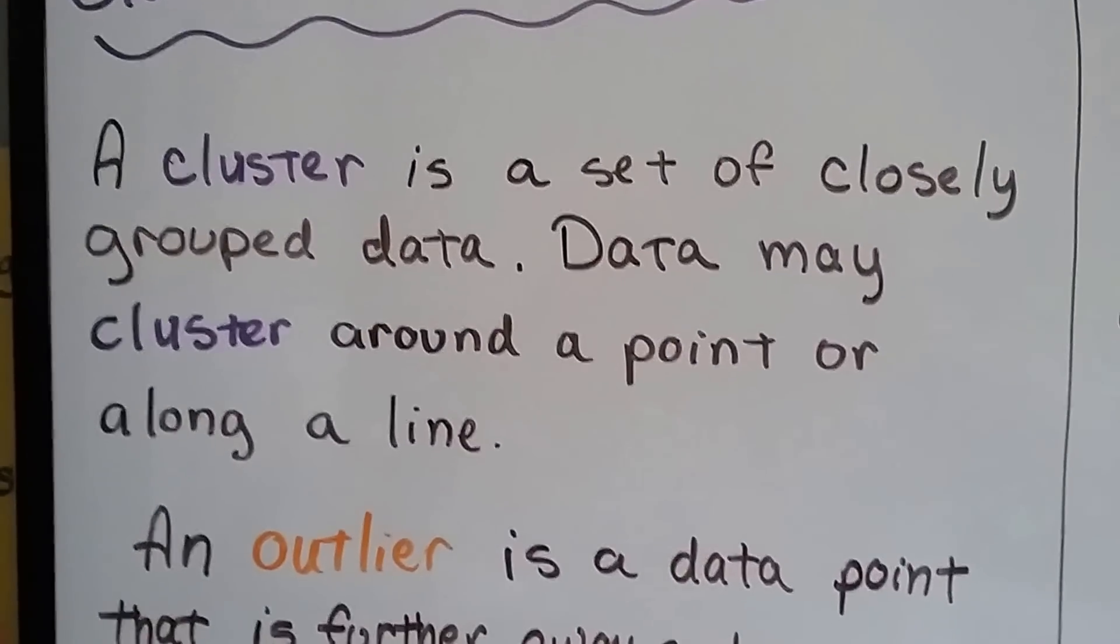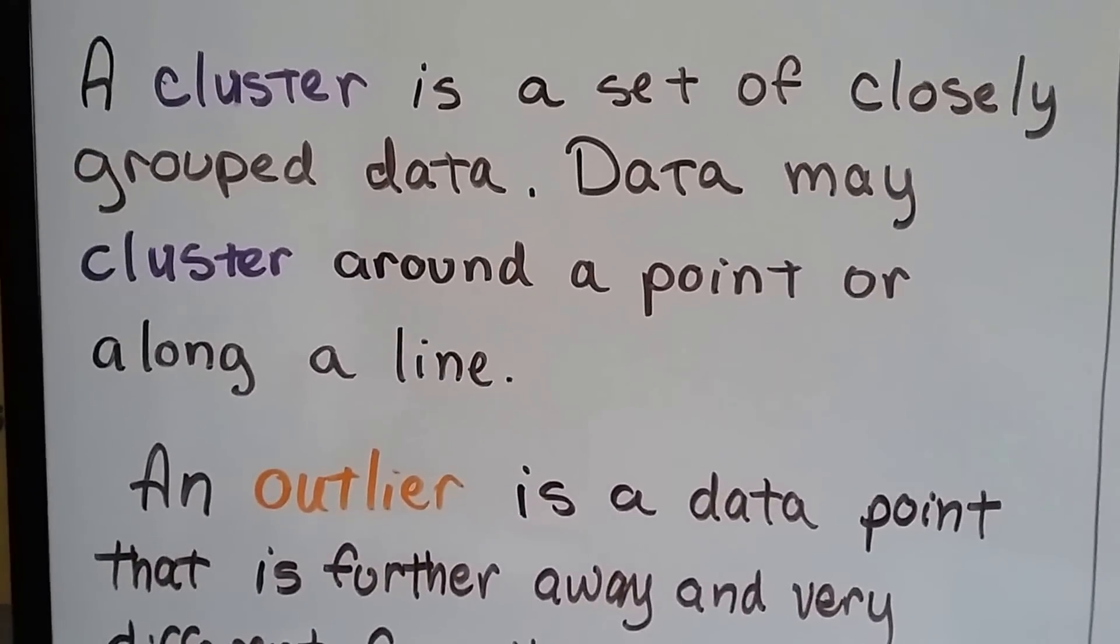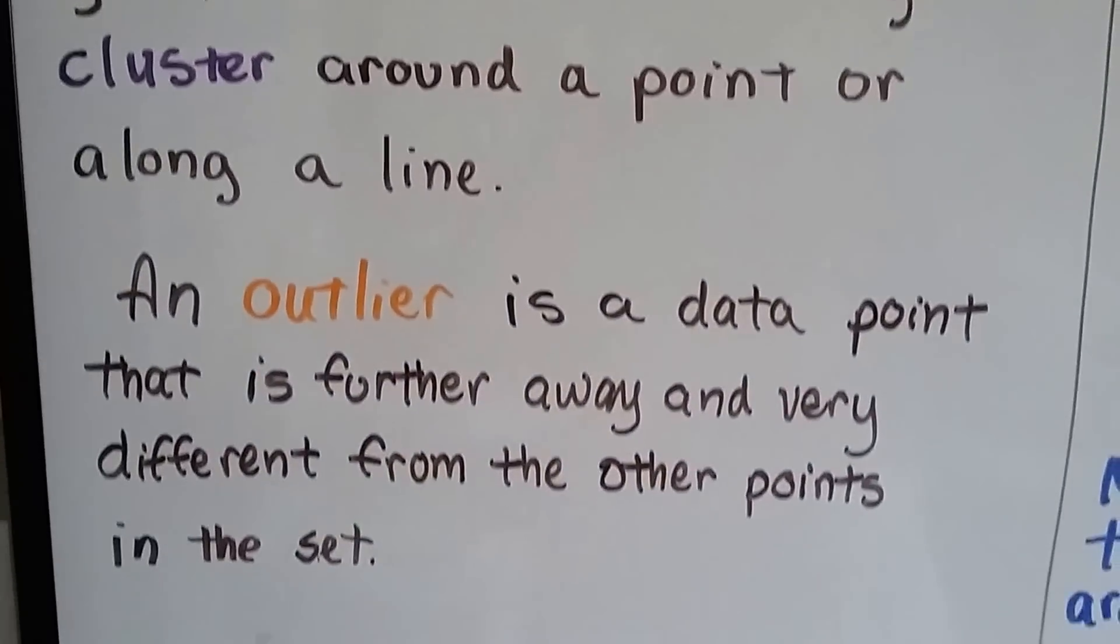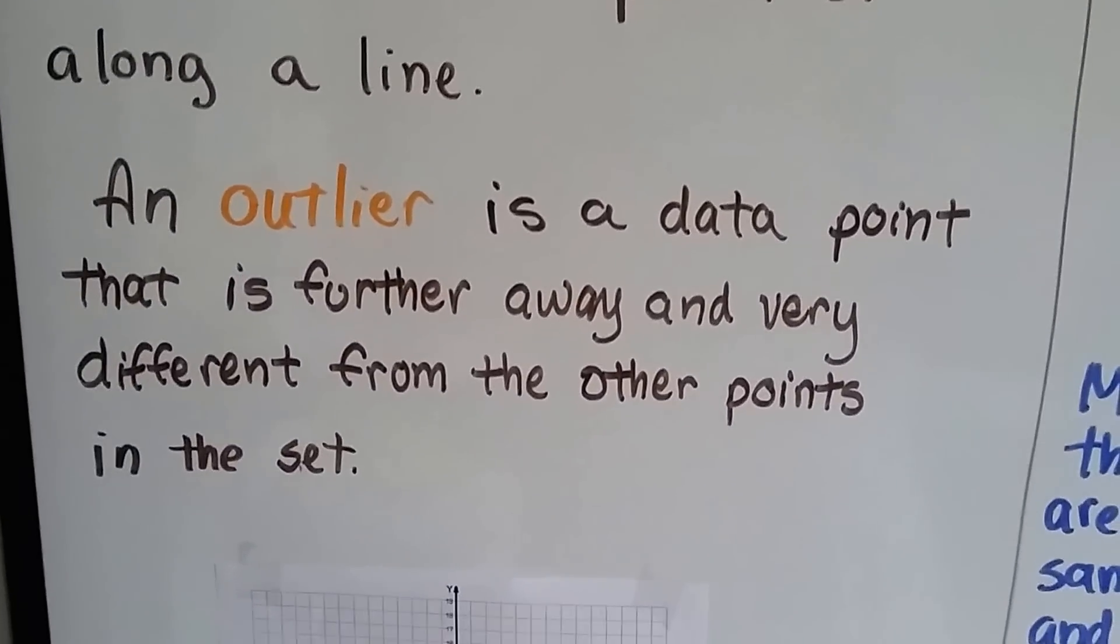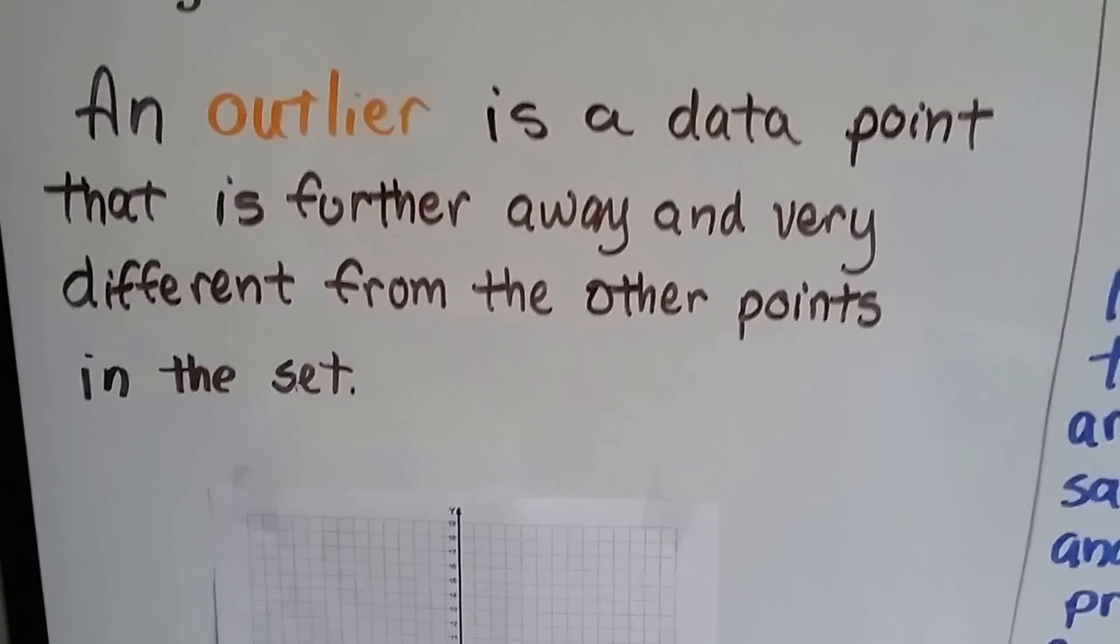A cluster is a set of closely grouped data. Its data may cluster around a point or along a line. And an outlier is a data point that's further away and very different from the other points in the set.